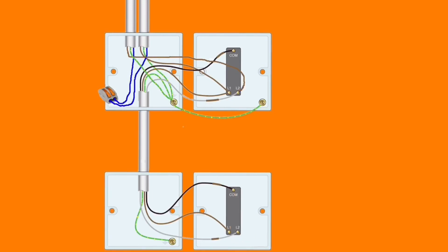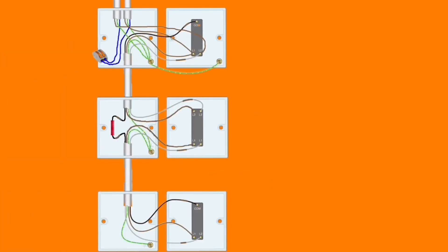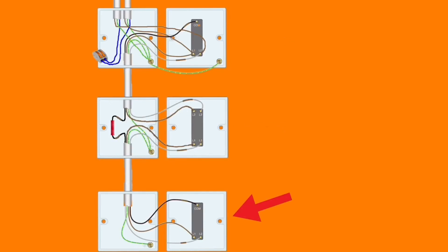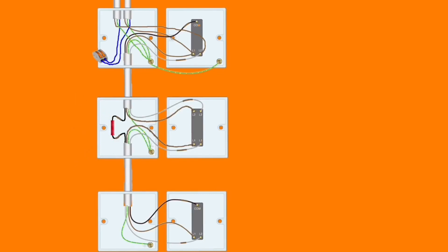For two-way and intermediate switching in the supply-to-switch method, our original switching position is at the top, the second switch down was the two-way from our previous presentation, and we've added an extra cable down to the bottom switch. The top switch is still a two-way switch, the middle switch is now an intermediate switch, and the new bottom switching position is a two-way switch. The connections in the top and bottom switches are identical to those previously discussed. The black conductor within the intermediate switch on both sides of the through crimp is identified with brown sleeving and joined together, with brown and gray conductors from the three-core cables connected in the top or bottom of the intermediate switch accordingly.